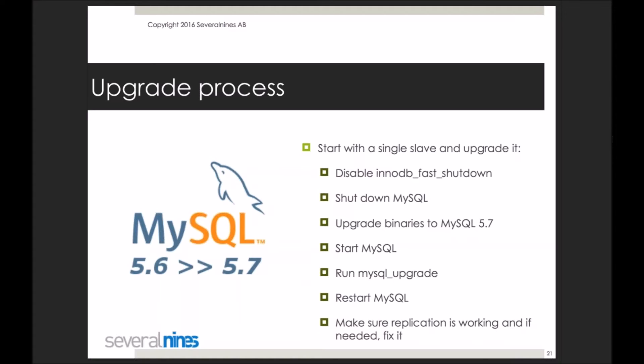You pick one of the slaves and start here. You disable the InnoDB fast shutdown, then shut down MySQL. Run the binary upgrade to install the MySQL 5.7 binaries using yum, apt, or whatever method you prefer. Then start MySQL on 5.7 and run MySQL upgrade to make sure all the schema tables and so forth have their format updated to 5.7. Then restart MySQL, because otherwise some features like replication don't work correctly. After the restart you should be all set — check replication to confirm the slave is replicating from the master. In my experience, when you follow this process, replication always worked correctly.